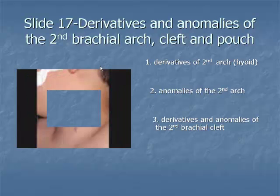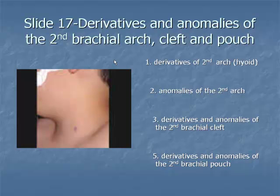Item 4. Second pouch endodermal epithelium lines the root of the tongue and part of the oropharynx, as well as the palatine tonsillar surface and crypts, the foramen cecum, and the thyroglossal duct. Faulty development of these derivatives results in thyroglossal cysts, sinuses, and fistulas, as well as lingual thyroid.